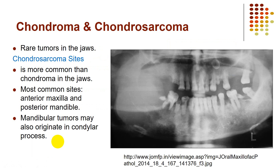Now, cartilage-forming tumors: we have benign chondroma and malignant chondrosarcoma. Chondrosarcoma occurs more in the maxilla than the mandible, and more in the anterior maxilla, because there are remnants of cartilage in periogenic cells in the anterior maxilla. If it occurs in the mandible, it prefers the posterior mandible due to the cartilaginous center of growth in the condyle head, and may also occur in the condylar process.